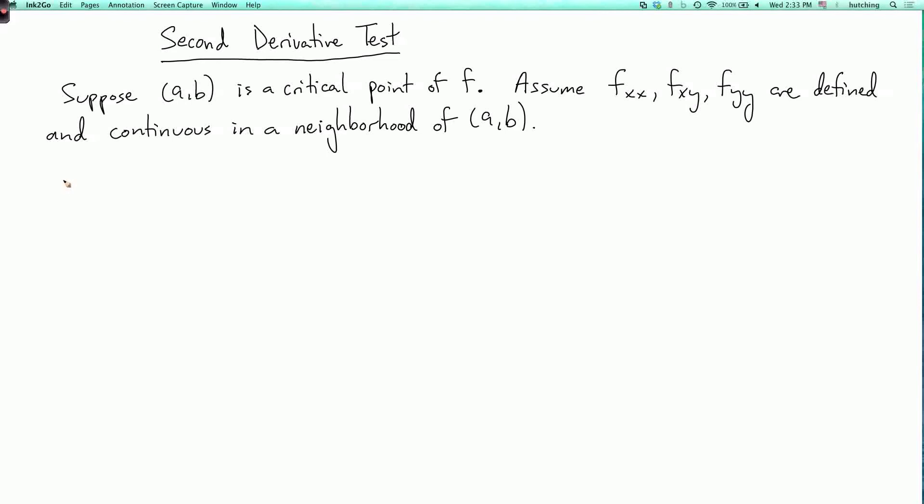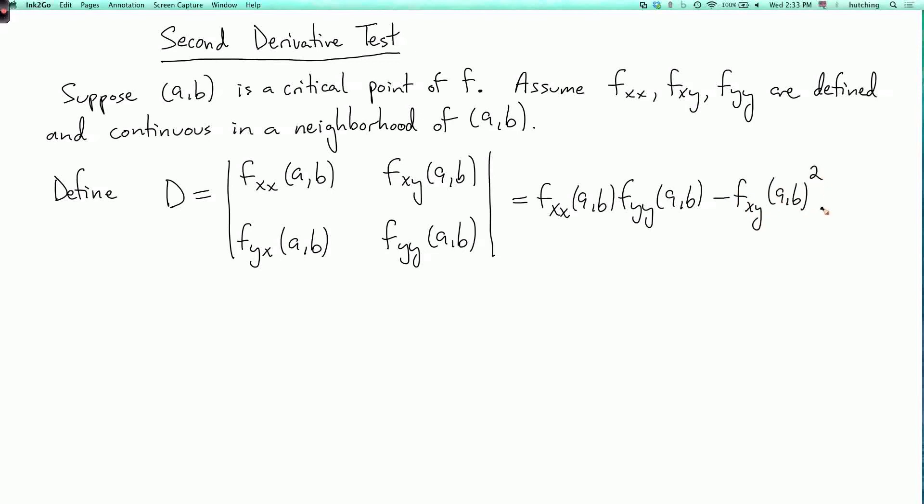So we now put them together to make one number. We define D to be the determinant of the matrix of second partial derivatives at (a,b). So I have fxx at (a,b), fxy at (a,b), fyx at (a,b), which of course is the same as fxy, and fyy of (a,b). So if we expand that out, it's fxx of (a,b) times fyy of (a,b) minus fxy of (a,b) squared. So that's some real number.